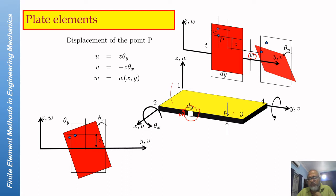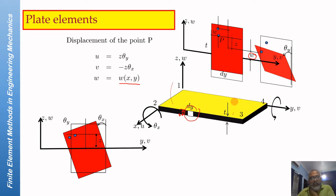The Z displacement of the plate will be a function of X and Y. So W may be different in different parts of the element, and the Z displacement is a function of X and Y.